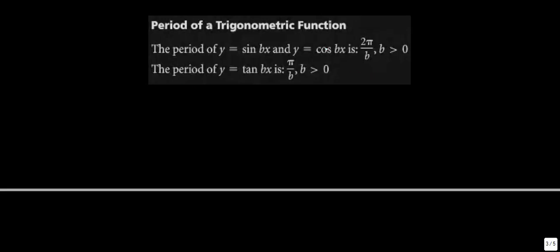In general, the period of y = sin(bx) and y = cos(bx) is 2π divided by b. For y = tan(bx), it's the same formula but with π instead of 2π, since tangent's basic period is π.